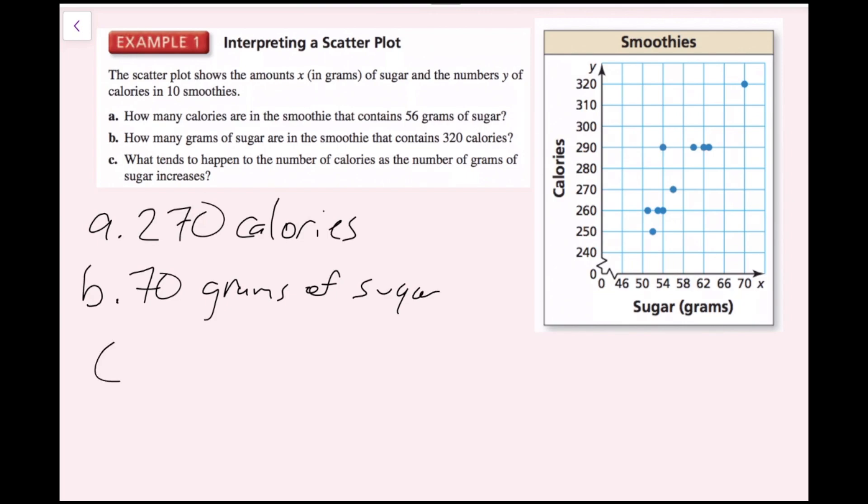For Part C, what tends to happen to the number of calories as the number of grams of sugar increases? We don't know for sure because this is not a line or any other function that has a definite pattern. But we can see that it tends to go up. If I increase the number of grams of sugar, then the number of calories tend to go up. The number of calories also increases.